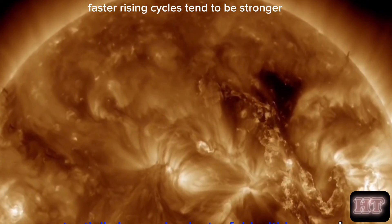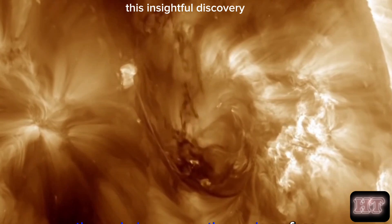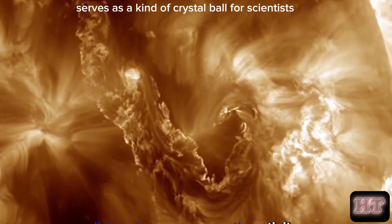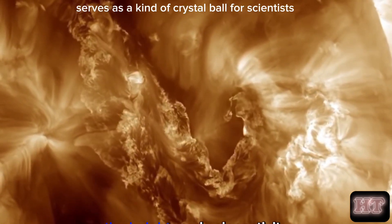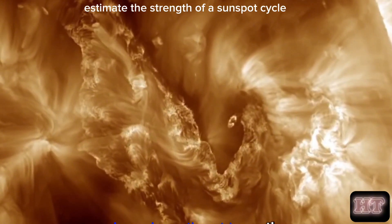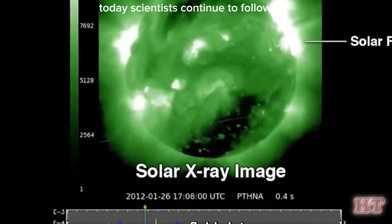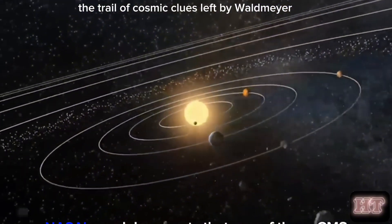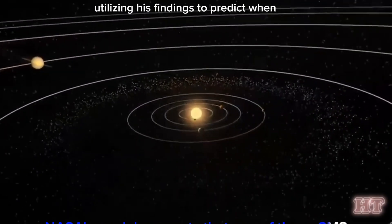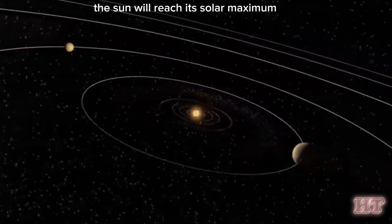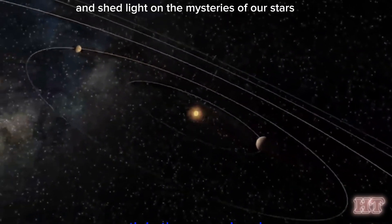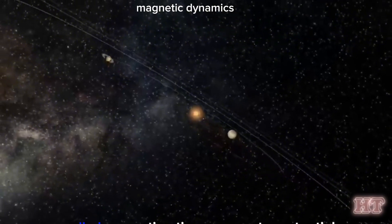This insightful discovery serves as a kind of crystal ball for scientists, offering them a tool to estimate the strength of a sunspot cycle. Today, scientists continue to follow the trail of cosmic clues left by Waldmeier, utilizing his findings to predict when the sun will reach its solar maximum and shed light on the mysteries of our star's magnetic dynamics.